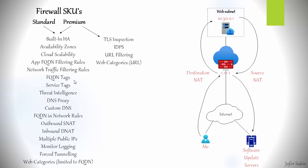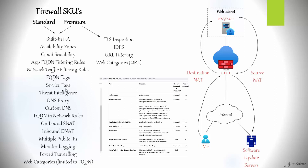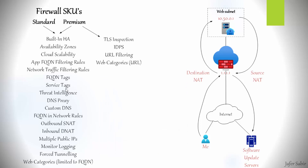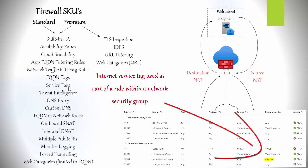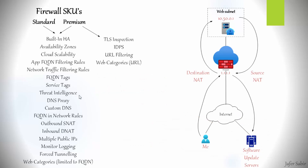FQDN tags can be used in conjunction with application rules to allow well-known services such as Windows Updates and Azure Backup through the firewall. Service tags are groups of IP prefixes managed by Azure — you cannot create or configure them yourself. For example, the service tag called 'internet' is defined by Azure as the set of IP addresses outside the virtual network reachable by the public internet, so you can use it as a destination in a rule without manually defining those addresses.